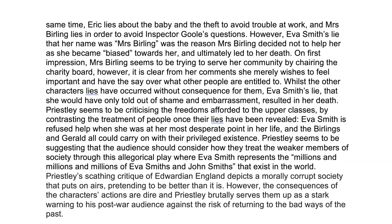Eva Smith is refused help when she was at her most desperate point in life, and the Birlings and Gerald could all carry on with their privileged existence. Priestley seems to be suggesting that the audience should consider how they treat the weaker members of society through this allegorical play, where Eva Smith represents the millions and millions of Eva Smiths and John Smiths that exist in the world. Priestley's scathing critique of Edwardian England depicts a morally corrupt society that puts on airs pretending to be better than it is. However, the consequences of the characters' actions are dire, and Priestley brutally serves them up as a stark warning to his post-war audience against the risk of returning to the bad ways of the past.